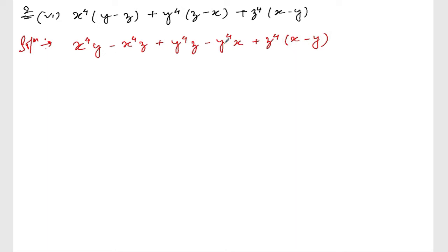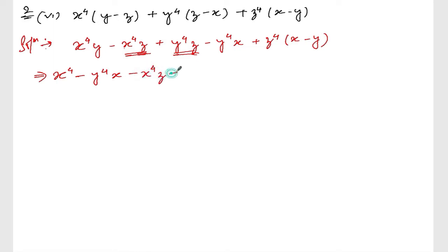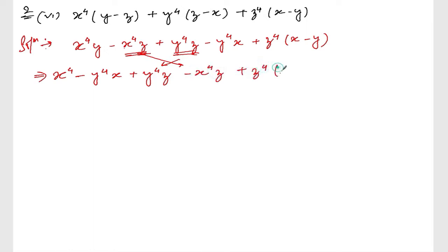Now let us arrange so that I can get (x minus y) common. So let me take x to the power 4 first, minus y to the power 4 times x. And for the middle terms: y to the power 4 times z, minus x to the power 4 times z, plus z to the power 4 times (x minus y).